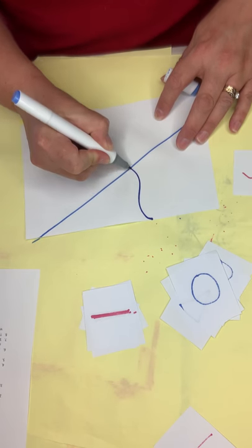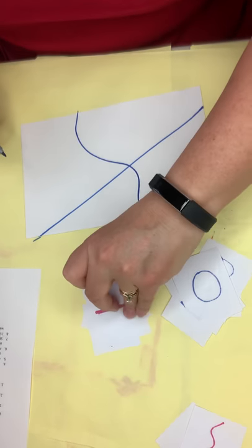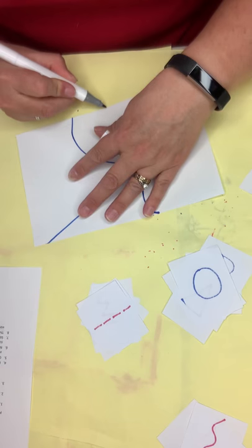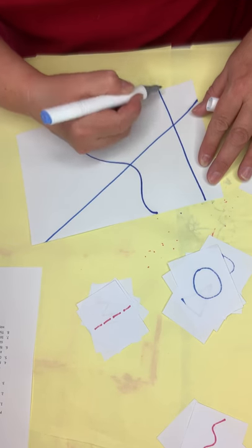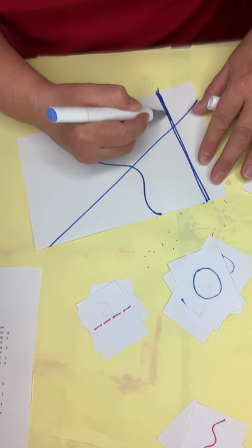So again from one side to the other. I'm going to just keep picking lines. Here's a thick line. Again from one side to the other.